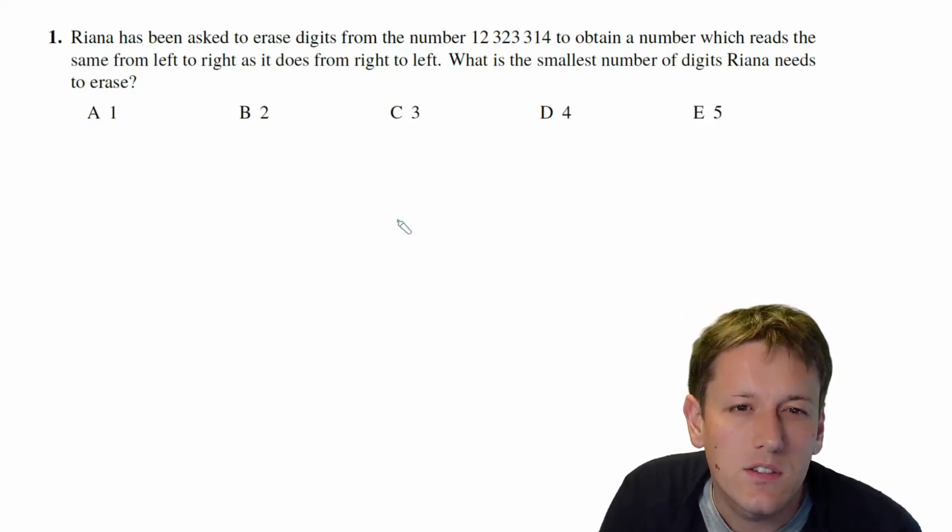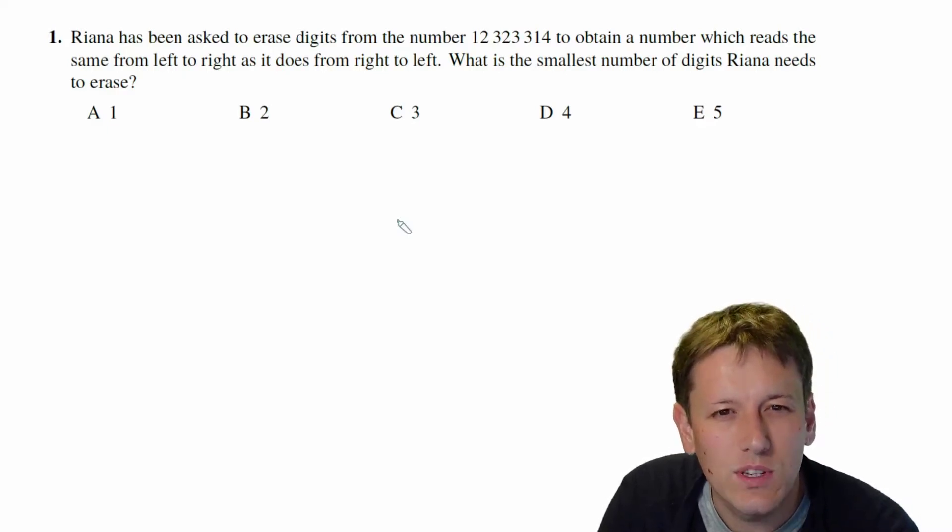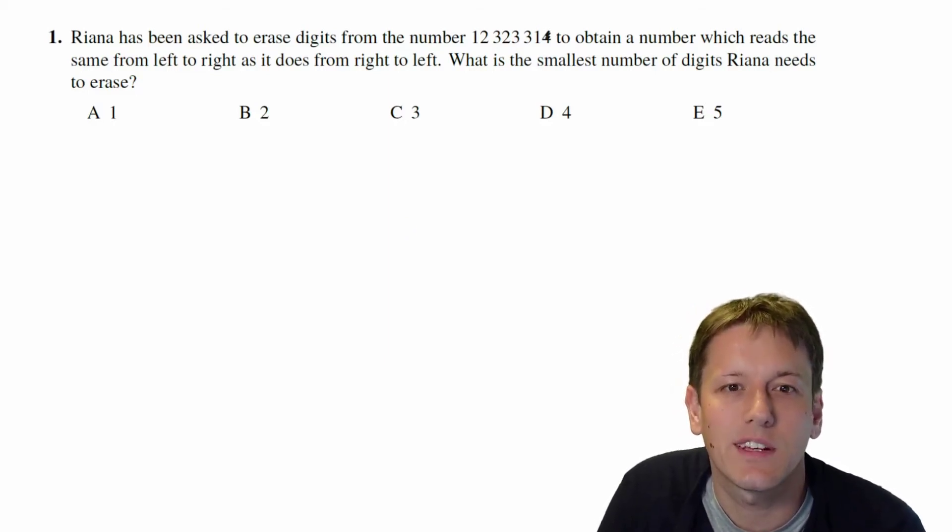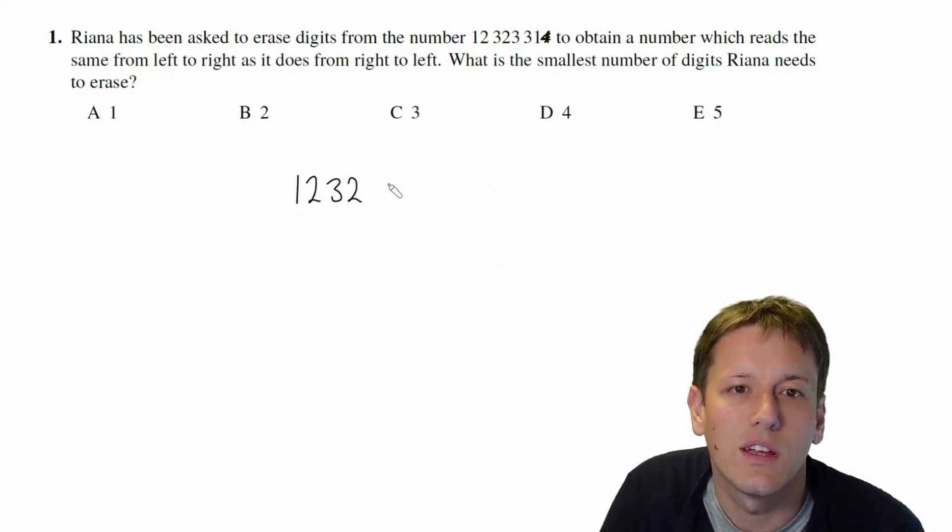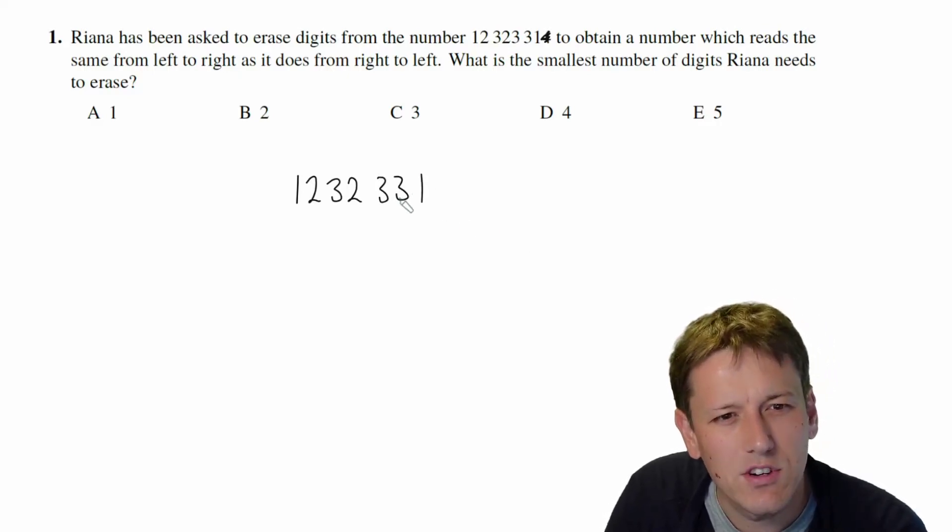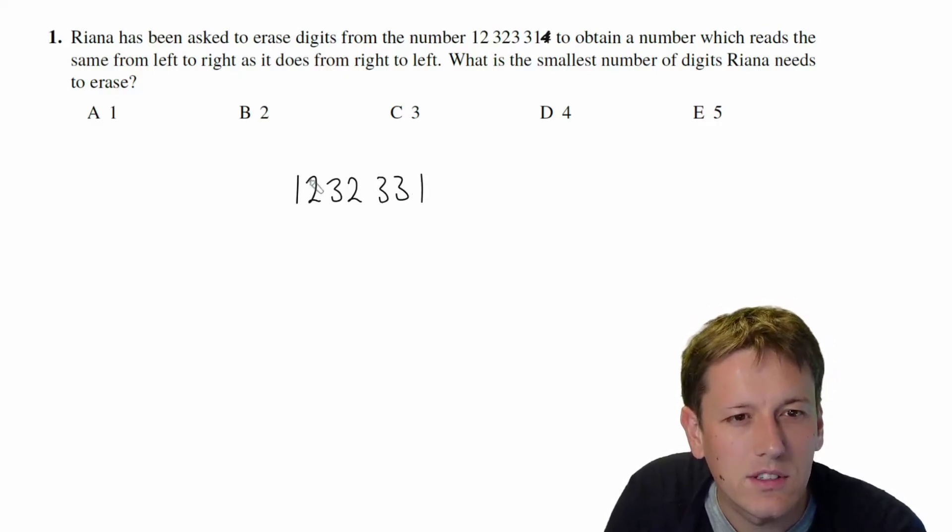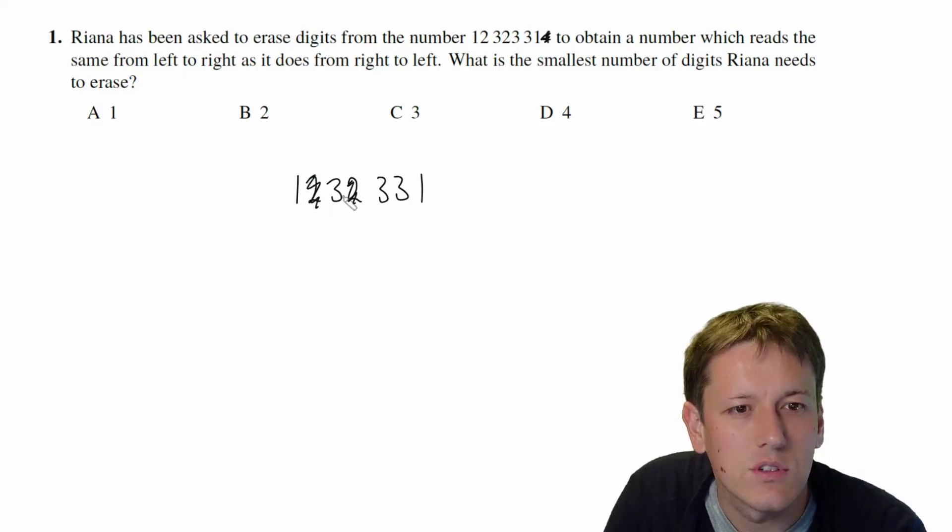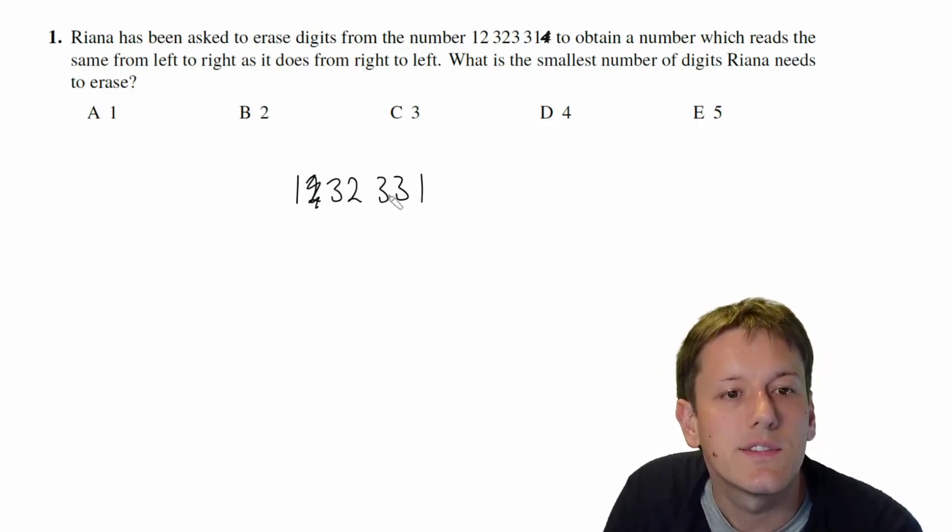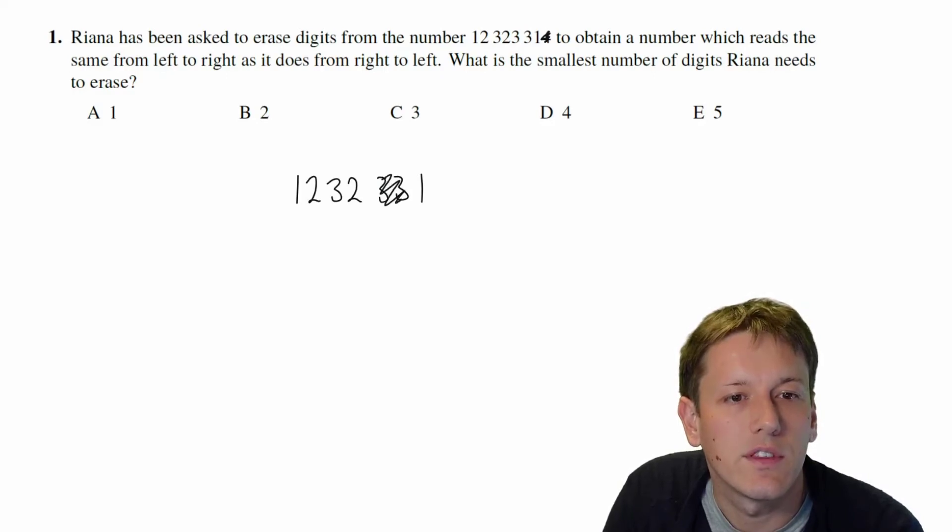Well the first thing we notice is that there's a four at the end and it's the only four, so if this is going to read the same front and back and the four stayed in, it would have to be the only number that was left. So we are definitely going to have to get rid of the four and then we're left with 1232331. Now I can make a palindrome here by, for example, I could get rid of the twos then 13331 would be left. I could also get rid of the threes here and leave 12321.